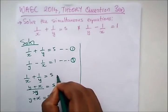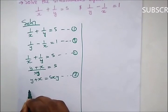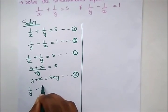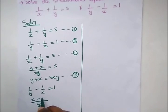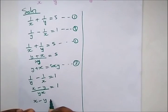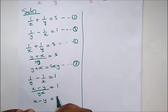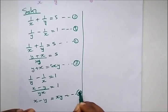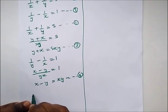Now to simplify equation two: one over y minus one over x equal to one. The LCM is xy, so we get x minus y equal to one. Cross-multiplying, x would be in front, so we have x minus y equal to xy. Let's take this as our equation four.